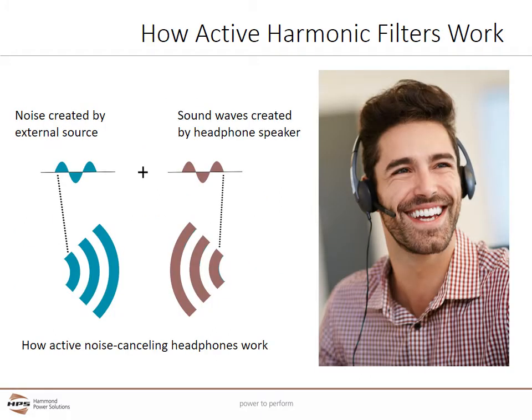A good comparison for active harmonic filters is noise-canceling headphones. To cancel the lower frequency portions of audible noise, noise-canceling headphones use active noise control — incorporating a microphone that measures ambient sound, and a small speaker in each ear that generates an audible waveform that is the exact negative of the ambient sound. The headphone's microphone acts the same way the active filter's current transformers work. Rather than using speakers to generate an equal but opposite noise, active harmonic filters generate currents equal but opposite to the harmonic currents and inject those into the system.